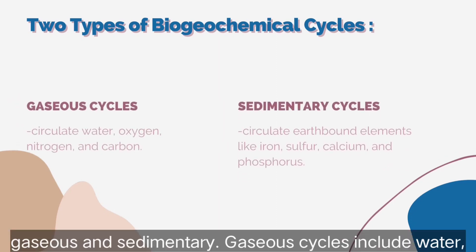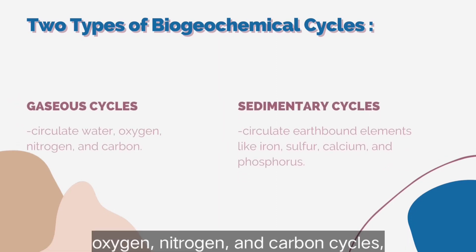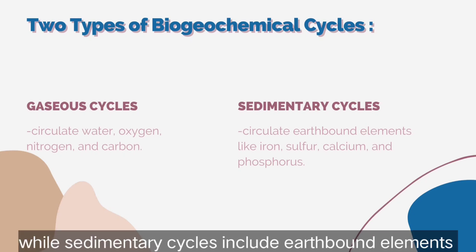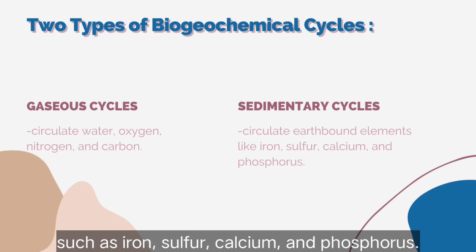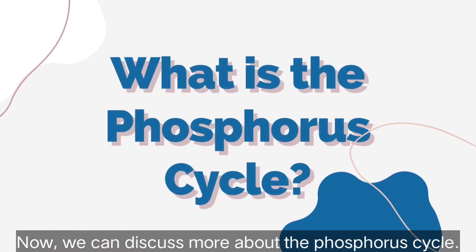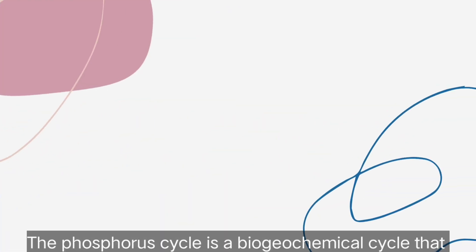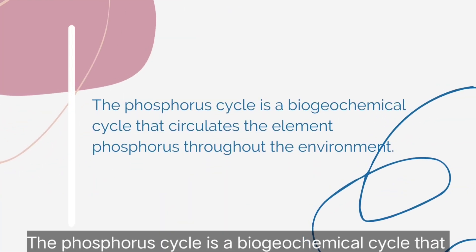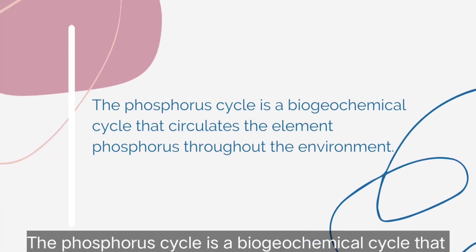There are two types of biogeochemical cycles: gaseous and sedimentary. The gaseous cycle includes the water, oxygen, nitrogen, and carbon cycles, while the sedimentary cycle includes earthbound elements such as iron, sulfur, calcium, and phosphorus. Now we can discuss more about the phosphorus cycle.